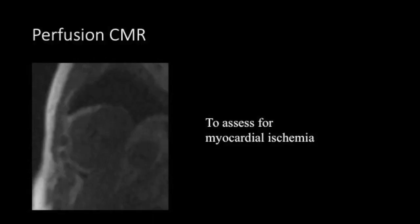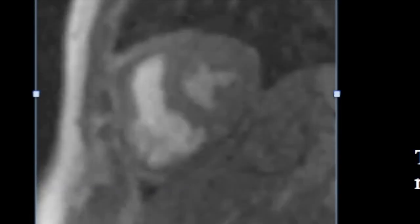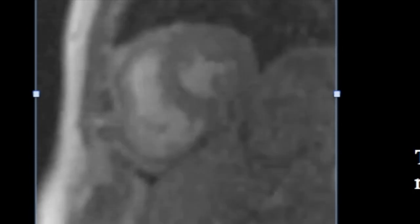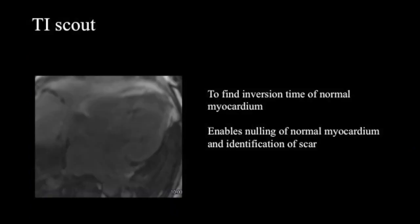Now let me briefly introduce the remaining CMR sequences. The first is a perfusion CMR sequence, which is acquired to understand the first-pass perfusion of gadolinium into the right, then the left-sided circulation, and finally the perfusion of the myocardium. Stress perfusion CMR is done to identify myocardial ischemia, with overall good accuracy comparable to PET or SPECT.